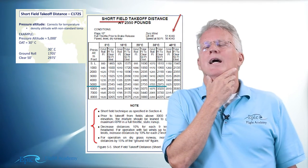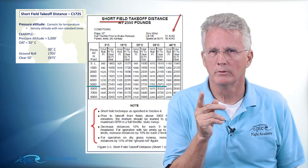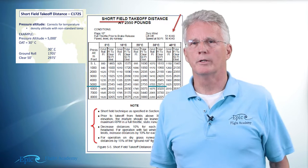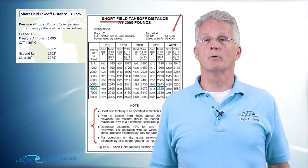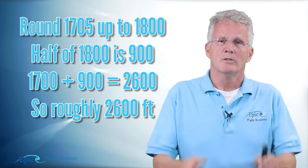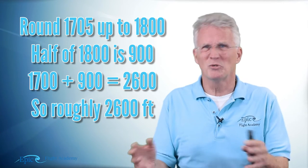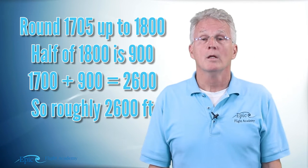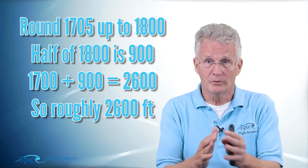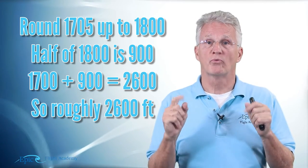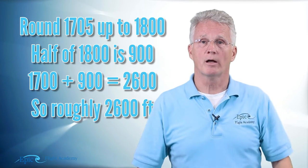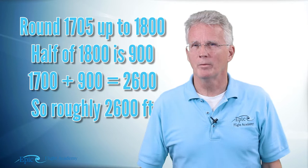Well remember we said if we're not in compliance with all the notes and conditions, wouldn't those distances be longer? Yes they would. And the old rule of thumb was, who remembers? Right, times it by 150 percent. So I'm going to take my ground roll 1,705 and I'm just going to ballpark, cut it in half. So I'm going to round it up to 1,800, half of that is 900, 1,700 plus 900, what do I get? About 2,600 feet or so. Now if I'm looking at a 5,000-foot runway, I know that 2,600 puts me approximately halfway down the runway and I know that my airplane should be performing such that it rotates and lifts off by that point. Well how do I know I'm halfway down the runway?